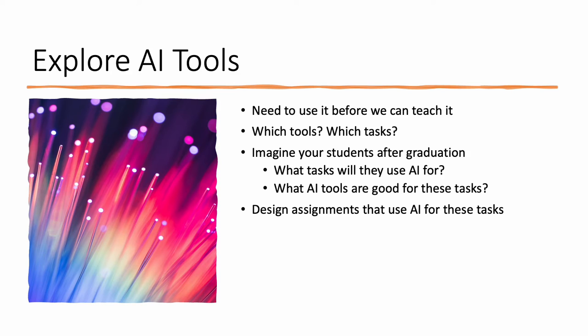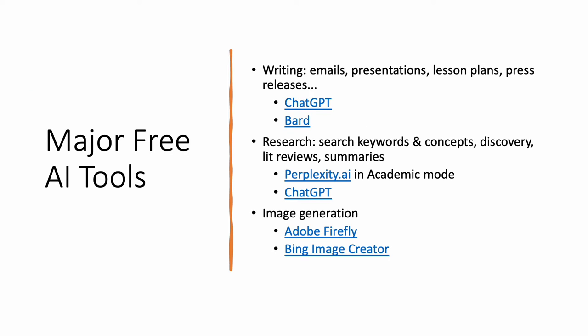Once you have that as a starting point, you can begin to design assignments that use AI for these tasks. I've broken it down into the big major tasks that AI tools are applicable to right now, along with some of the free major AI tools relevant to each. The three big tasks right now are writing, research, and image generation. Tools like ChatGPT and Bard are quite good at writing — helping to write emails, make presentations, and all sorts of things.